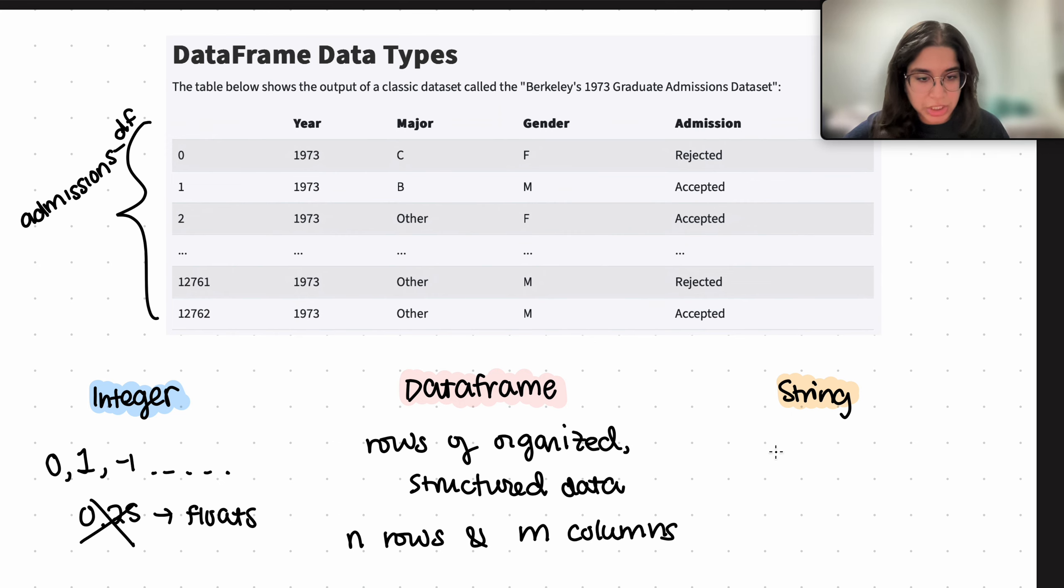And then finally, we have a string. A string is basically a piece of text surrounded by quotes. In Python, we use quotes to represent strings. It can be words like hello.